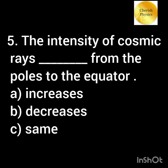The intensity of cosmic rays dash from the poles to the equator. Option A: increases. Option B: decreases. Option C: same.